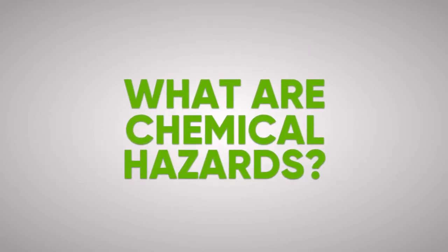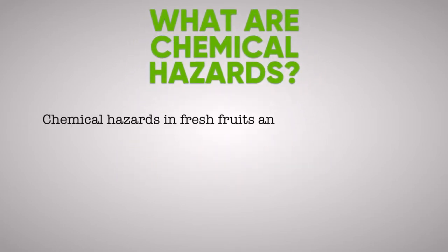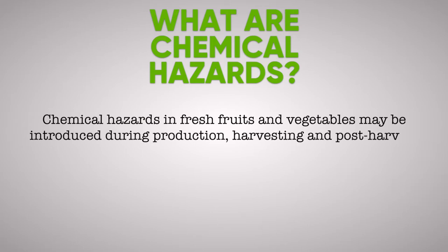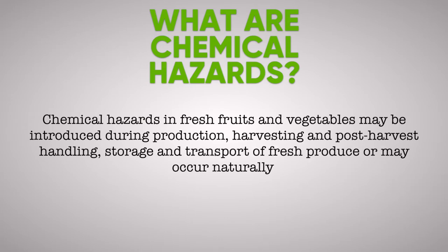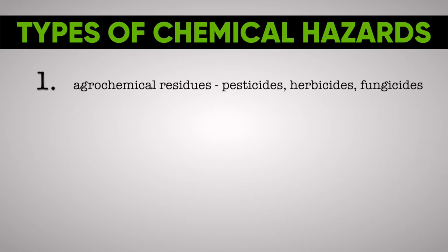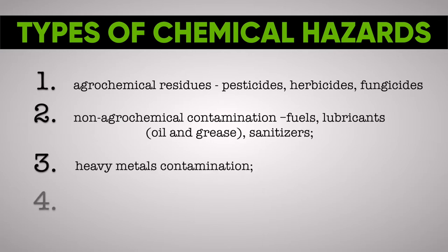What are Chemical Hazards? Chemical hazards in fresh fruits and vegetables may be produced during production, harvesting, and post-harvest handling, during storage and transport of fresh produce, or can occur naturally. Types of chemical hazards include: 1. Agrochemical residues, such as pesticides and herbicides; 2. Non-agrochemical contamination, for example fuels and lubricants; 3. Heavy metal contamination of the soil; 4. Naturally occurring plant toxins and allergens.